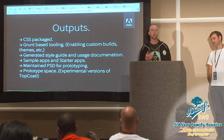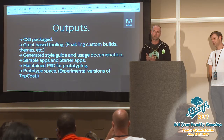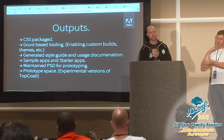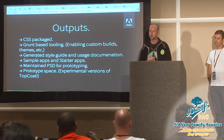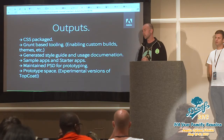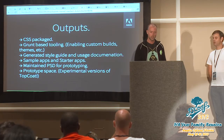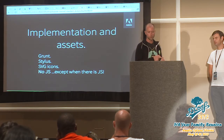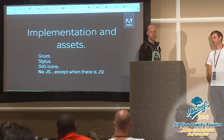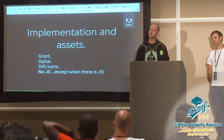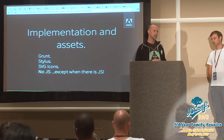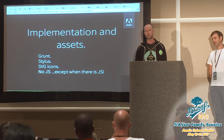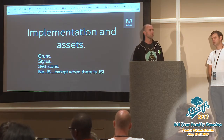There's a whole bunch of stuff for TopCoat. It's CSS generally, but we also have a bunch of Grunt-based tooling, generated style guides, sample apps, starter apps. We have a PSD for prototyping, a whole bunch of SVG icons from Adobe, and two fonts. There's no JavaScript yet, but that's not to say there won't be JS in the future. There is some stuff the web just doesn't do properly yet, like touch events, that we may want to polyfill for controls.